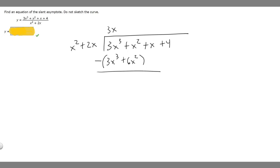And so if we minus this, 3x cubed minus 3x cubed will cancel. And then x squared minus 6x squared will become minus 5x squared. And then we'll just bring down what else is left, so plus x plus 4.